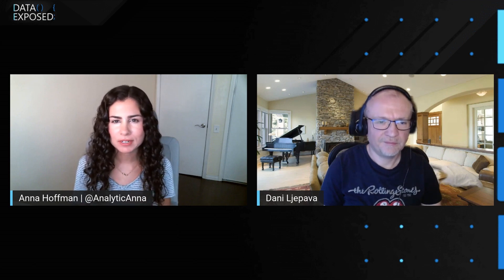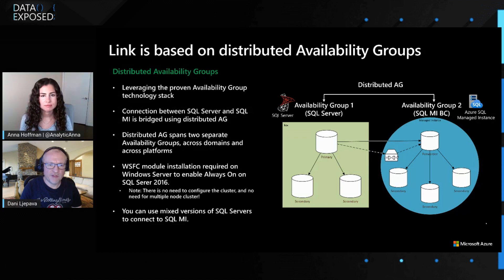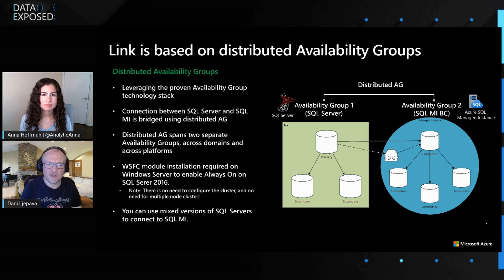I'd love to understand a little bit more. You mentioned the distributed availability group — can you tell us a little bit more about how that works? Sure. We're using the always-on technology, and with that stack we're using distributed availability group. It essentially helps you connect two availability groups together. We create one availability group on SQL Server, and then Managed Instance already has its own availability group, and we use the distributed AG to bridge the two.